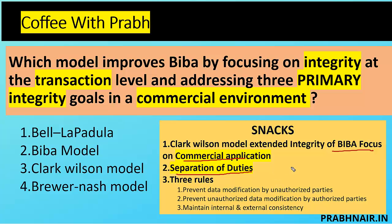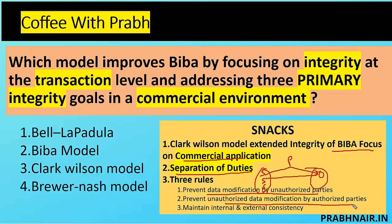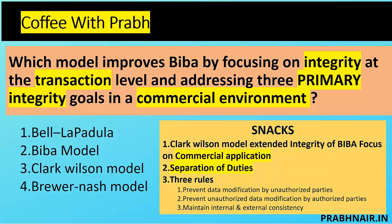Clark Wilson says we have a subject, a program, and an object. Any subject who wishes to access an object needs to go through the program. So one person will not perform an end-to-end transaction — we have a group of three people to complete a transaction. This prevents data modification by unauthorized parties, prevents unauthorized modification by authorized parties through dependency, and maintains consistency. So whenever a question mentions consistency, separation of duty, commercial application, and integrity, the answer is Clark Wilson.